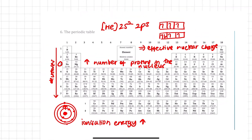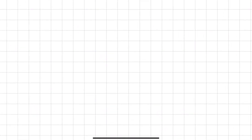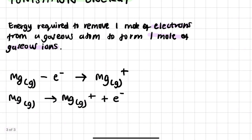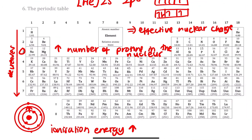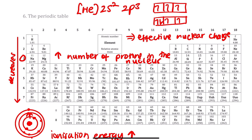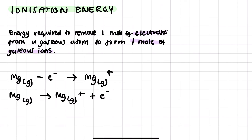To summarize: ionization energy is the energy required to remove 1 mole of electrons from 1 mole of gaseous atoms to form 1 mole of gaseous ions. The general trends are that ionization energy decreases down a group and increases across a period. The exceptions we need to know are between beryllium and boron, magnesium and aluminium, nitrogen and oxygen, and phosphorus and sulfur. We also need to know the general trends and how to explain them. I hope this video was helpful — if you have any questions, please let us know in the comments below.